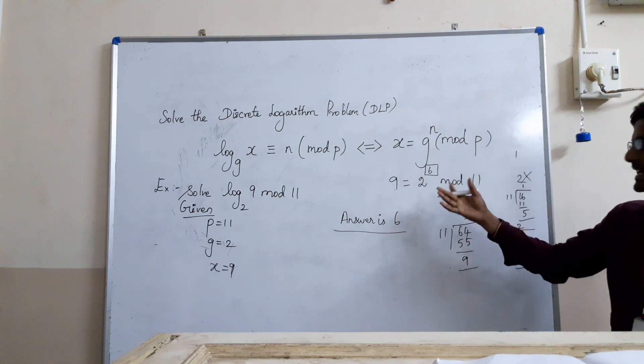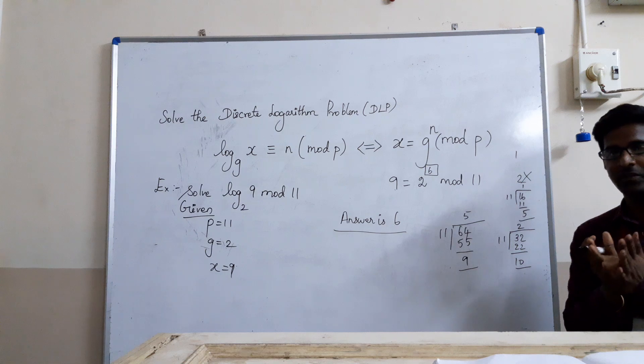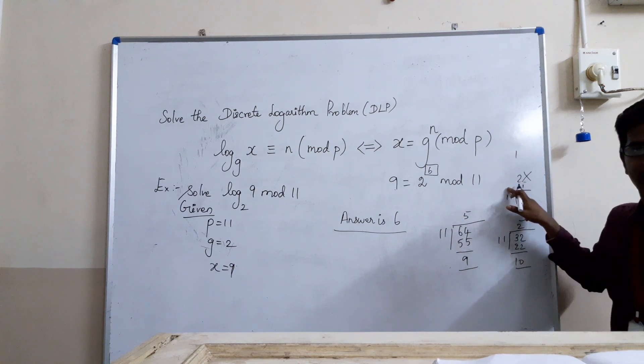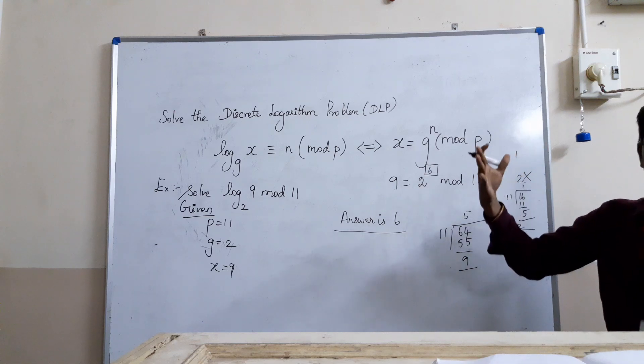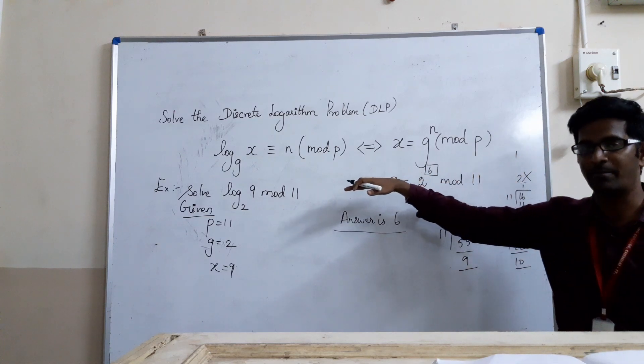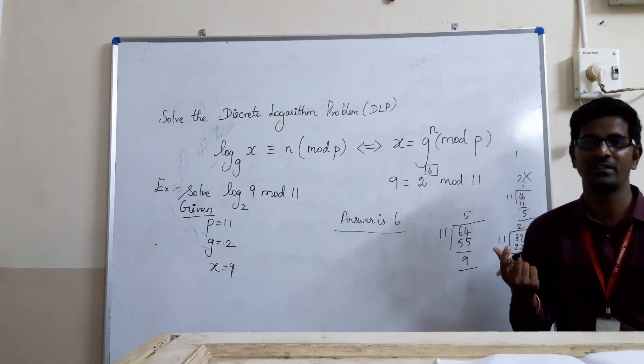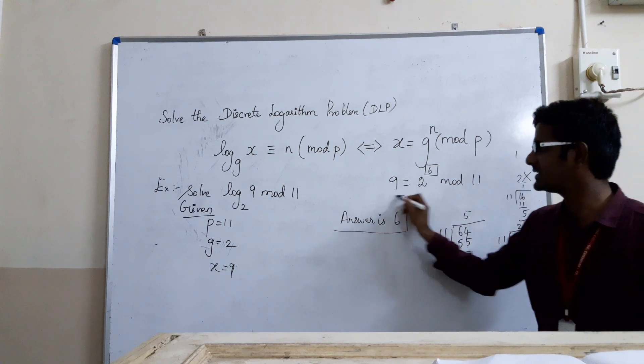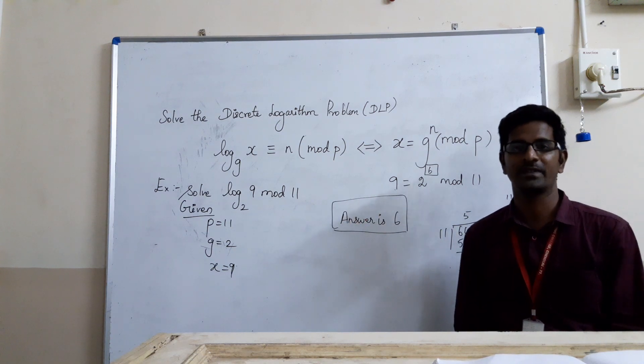If this problem involves a 200-digit prime number, there will be ample numbers that can satisfy this, but each number has been chosen for security reasons—that is the real answer. This is the discrete logarithmic problem. Thank you.